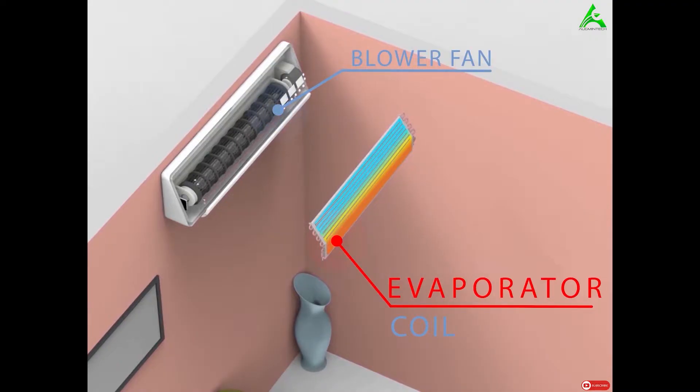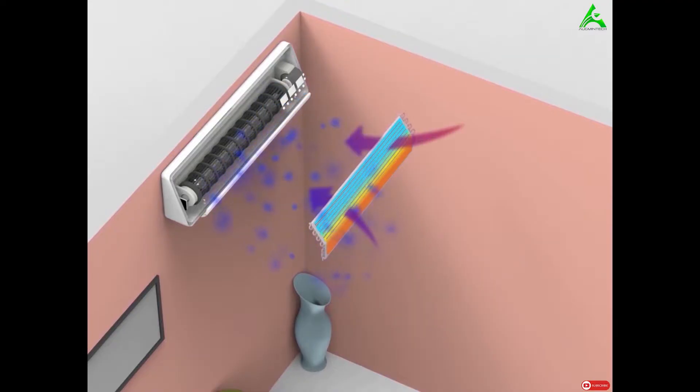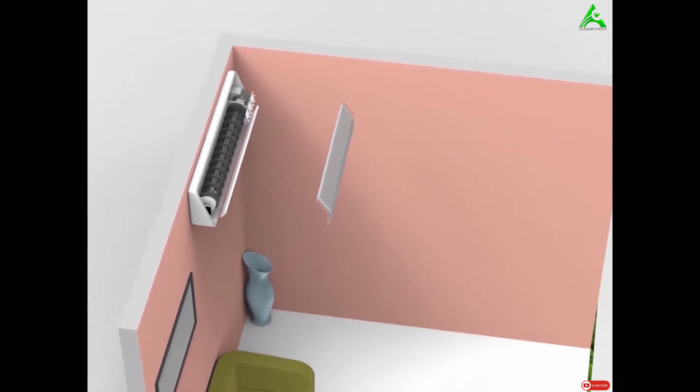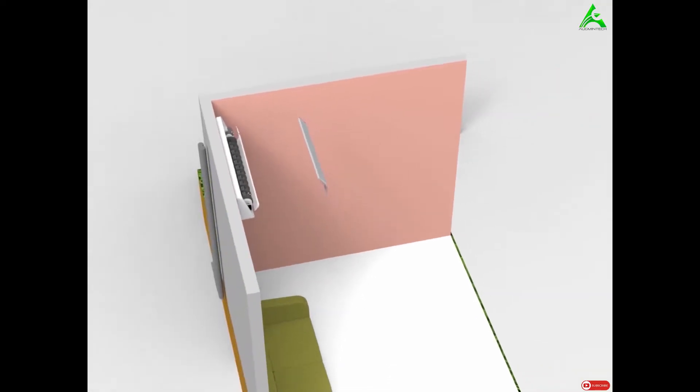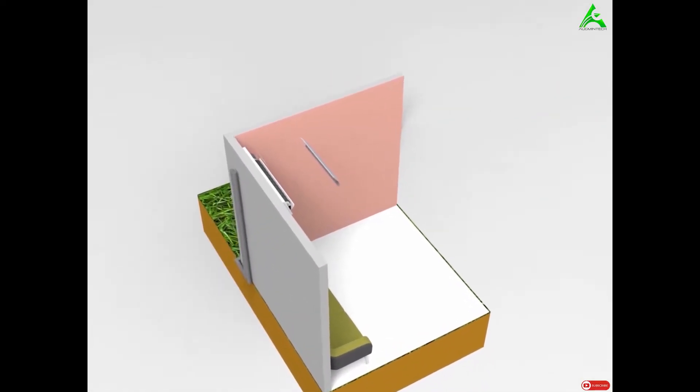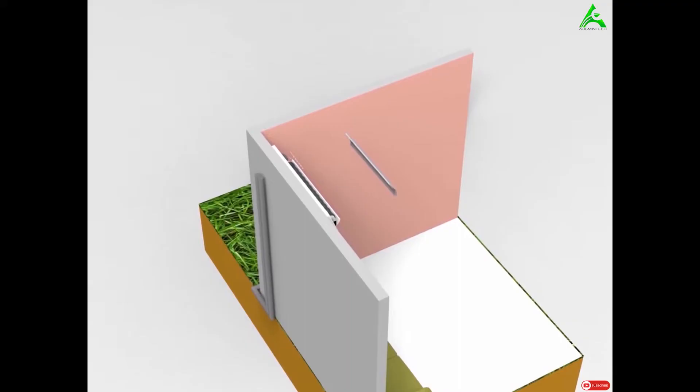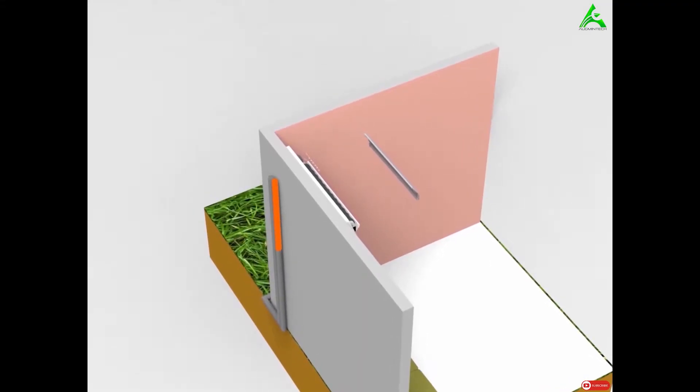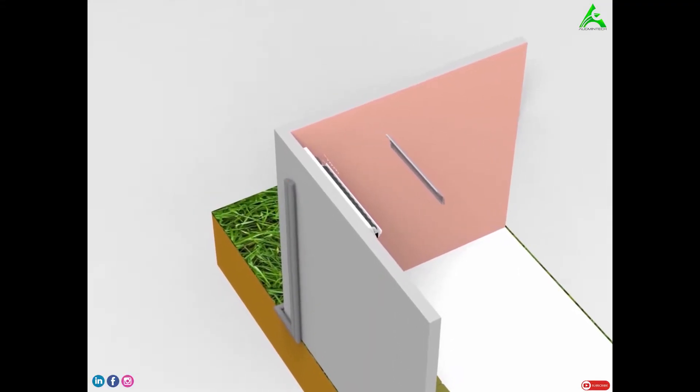As a result, the refrigerant boils and turns into vapor. The air, however, is cooled down and thrown into the conditioned space by a blower running near the evaporator coil. The high temperature vapor refrigerant ejected by the evaporator coil then